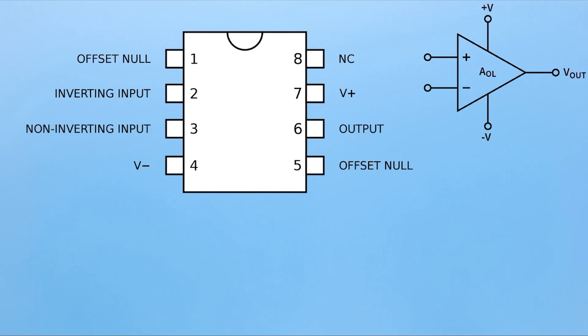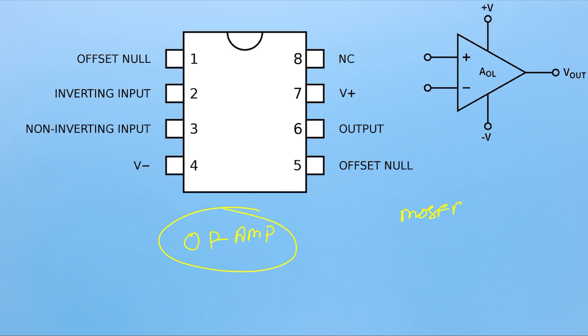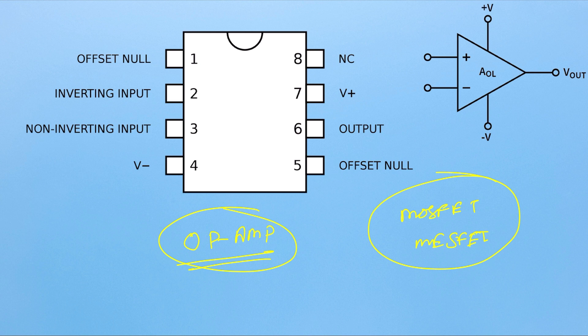So today we will start a new topic: the op amp. We've already completed MOSFET and BJT, so today we will start a new topic which is the op amp. From today we will do the basics of op amp, the circuit diagram of the op amp, and the negative feedback, positive feedback, virtual ground — this type of topics.